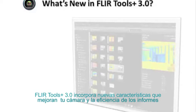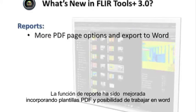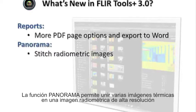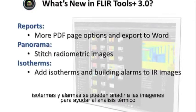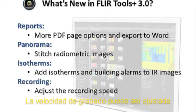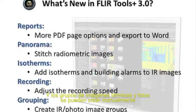FLIR Tools Plus Version 3 has some important improvements that can both enhance your FLIR camera and improve report writing efficiency. The reporting component has been improved, providing several PDF templates as well as the ability to create a Microsoft Word report. The Panorama tool allows you to stitch several thermal images into a high-resolution radiometric image. Isotherms and building alarms can be added to images to aid in thermal analysis. The speed for sequence recordings can be adjusted, and IR and photo image groups can be created manually.